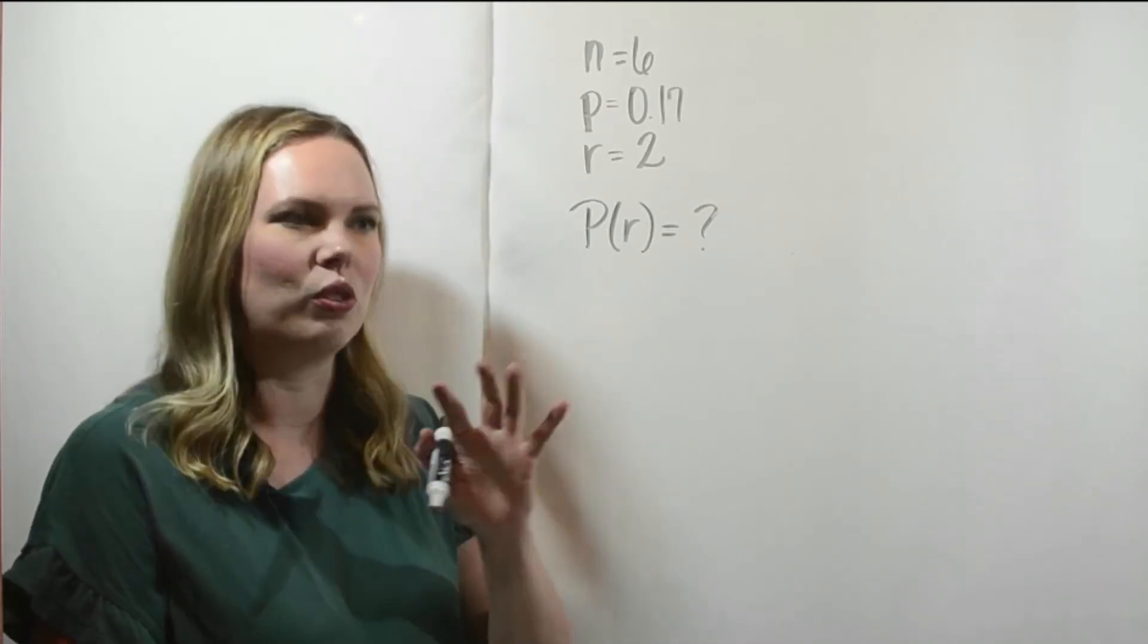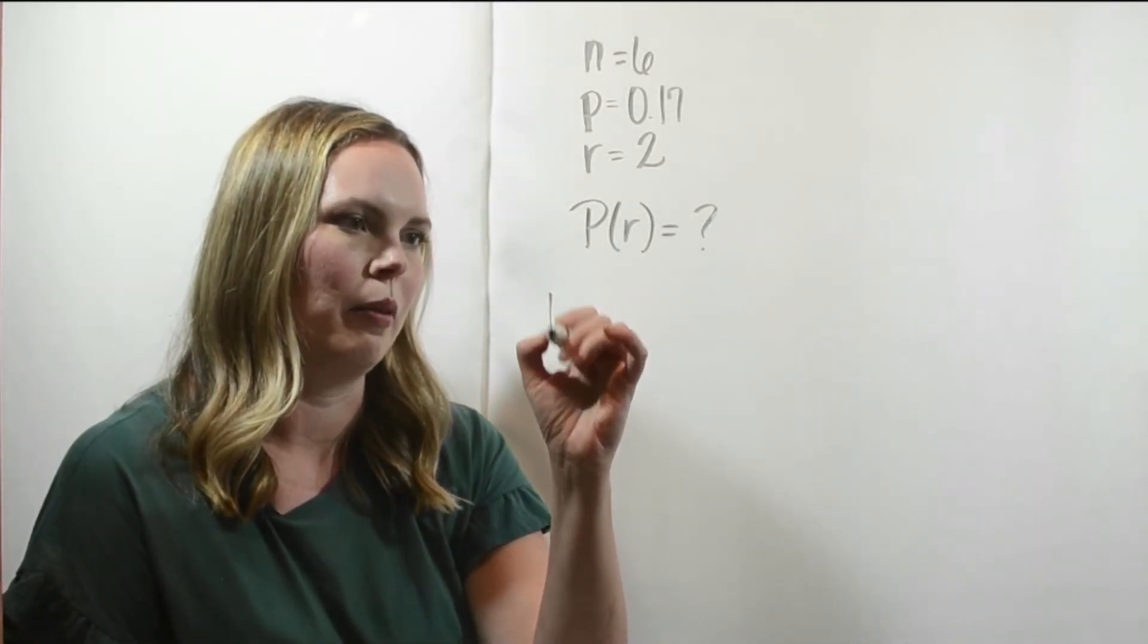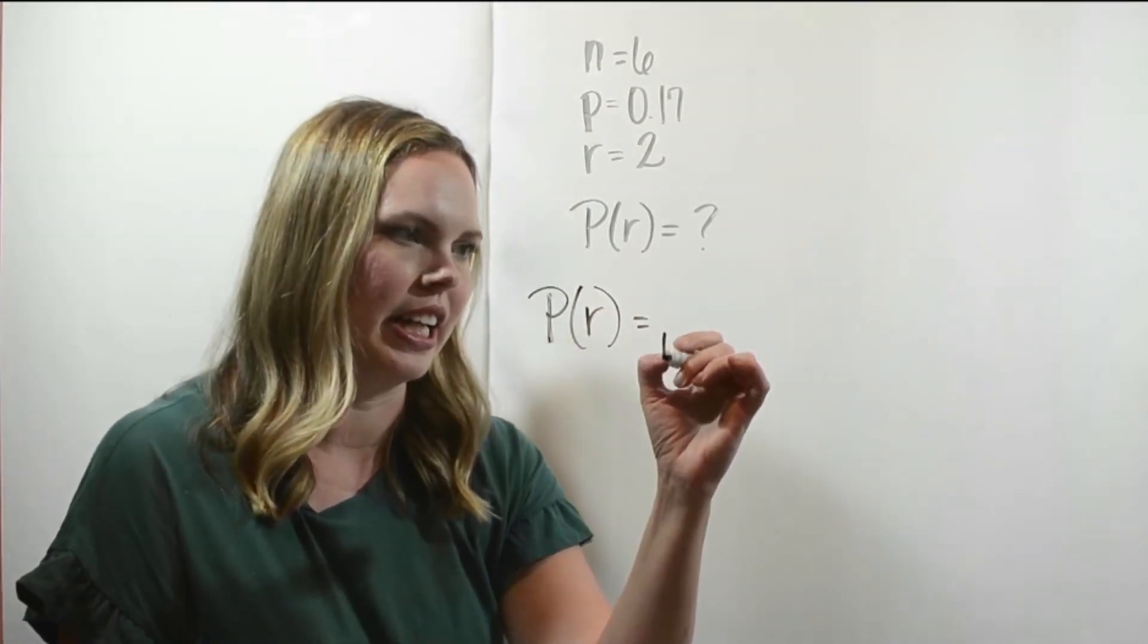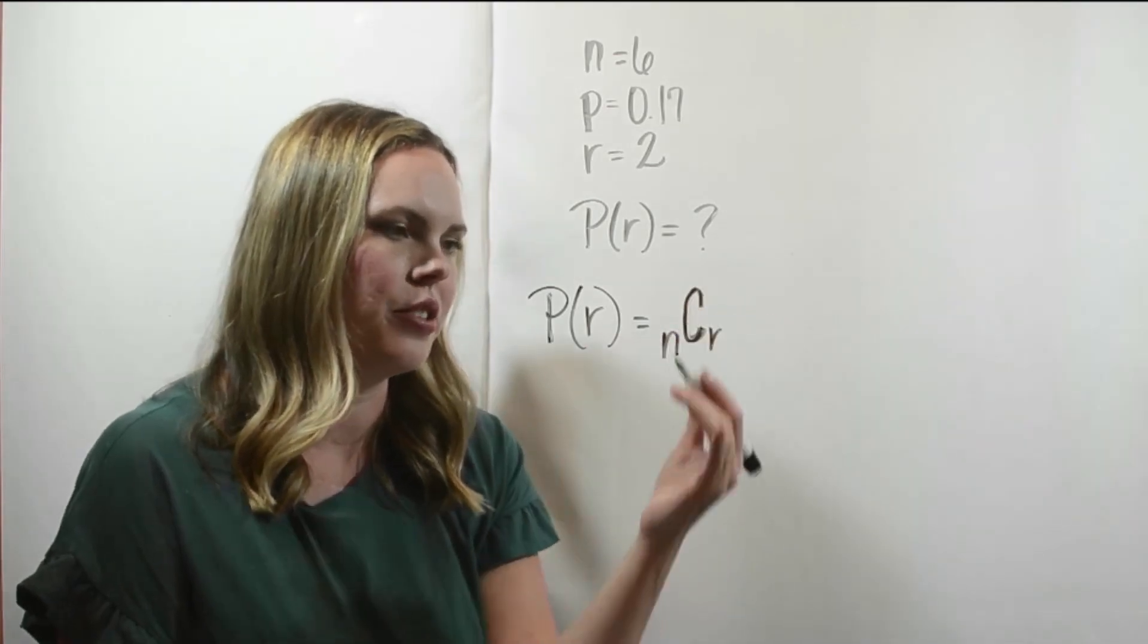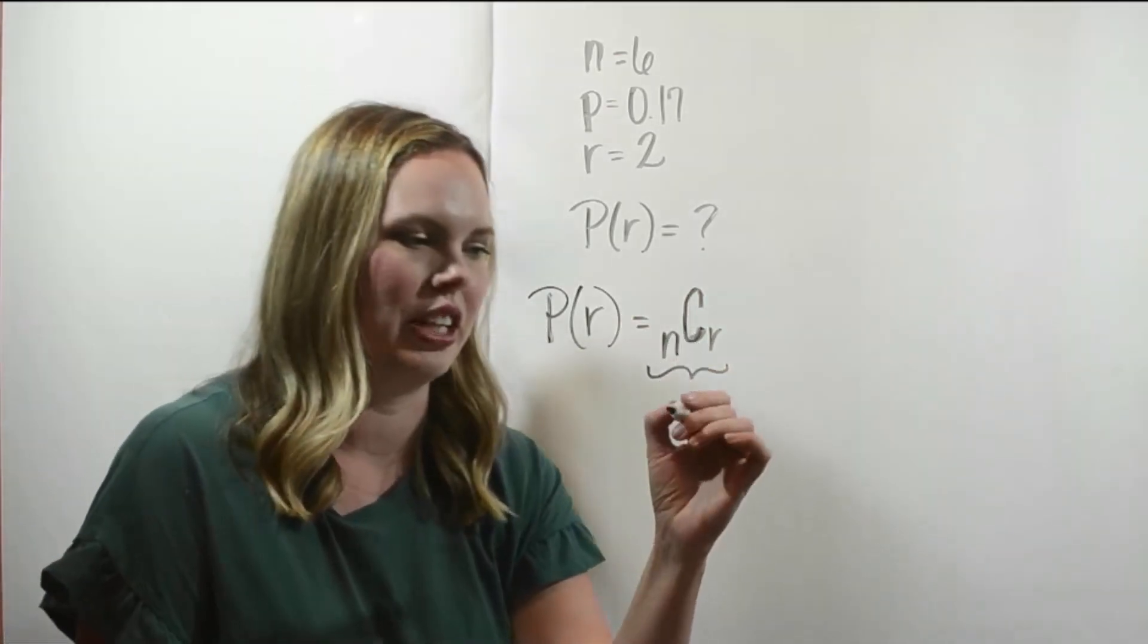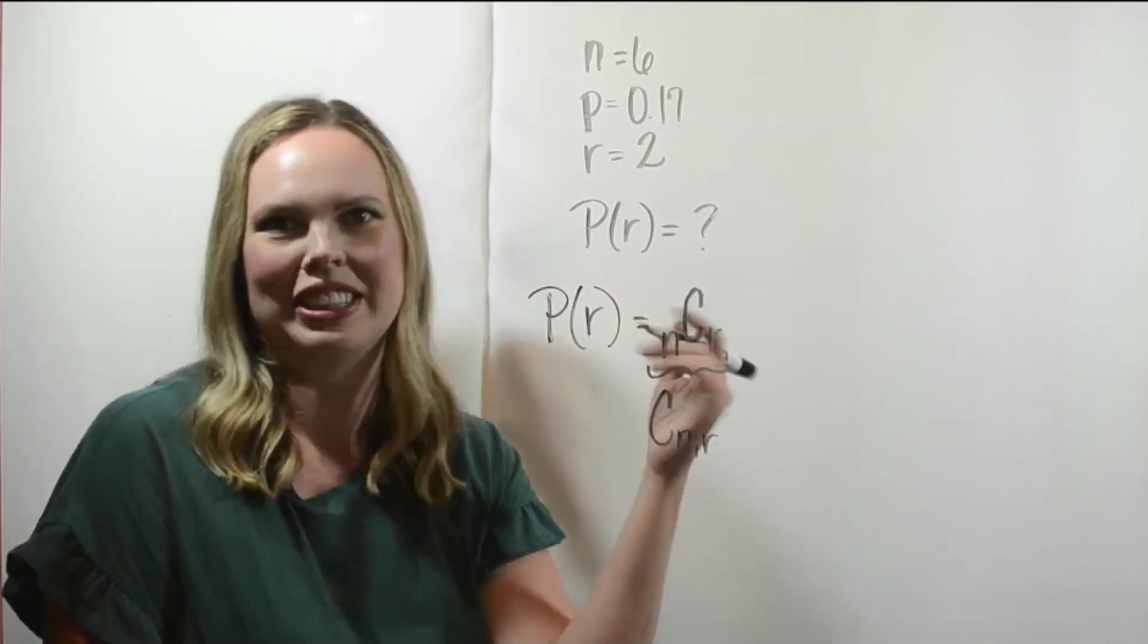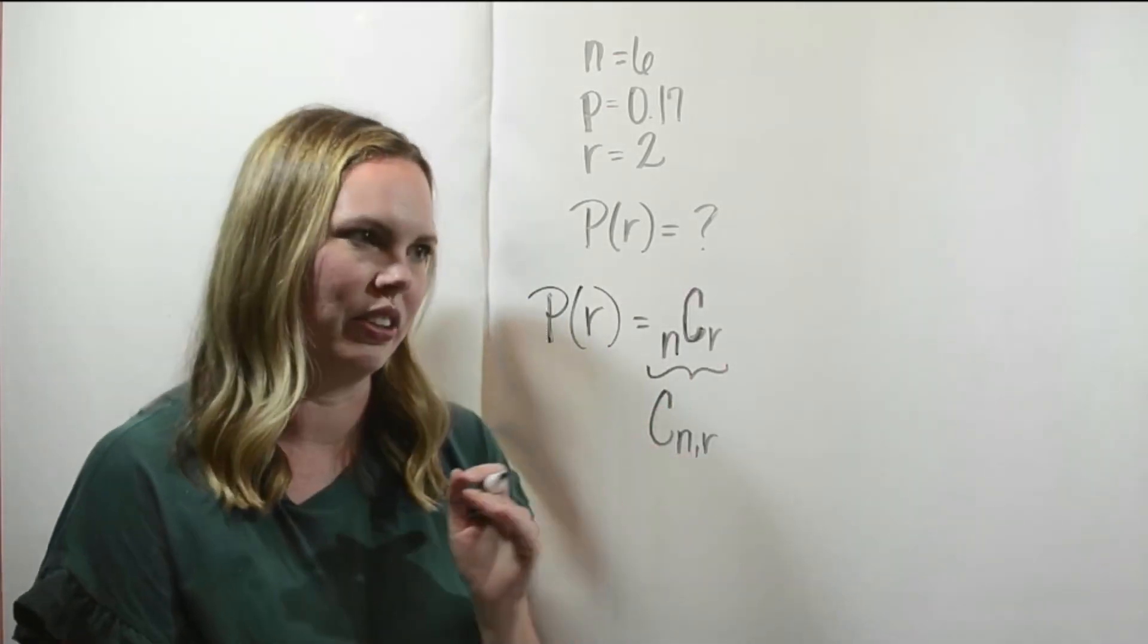Okay, so we're going to start with just writing that probability formula, the binomial formula. So we're looking for the probability of R, which is the number of successes, and the first thing in this formula is a combination, so it's N C R. And some books or other math professors may use a different notation here, they may use an C with an N, R. Our textbook actually uses this notation, but we have some worksheets, and I personally use this one a little bit more. But the same thing, it's the same thing, don't let that confuse you.